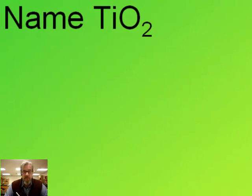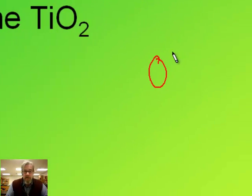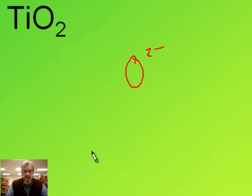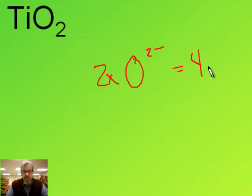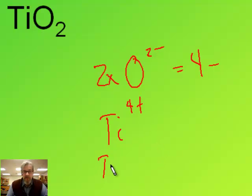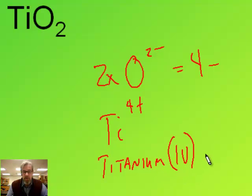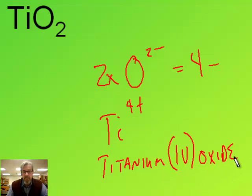One more: TiO2. The oxide ion is two minus. We've got two of them, so that means a total of four minus. The titanium, to balance, must be four plus. So when I write the name, it's titanium four oxide.